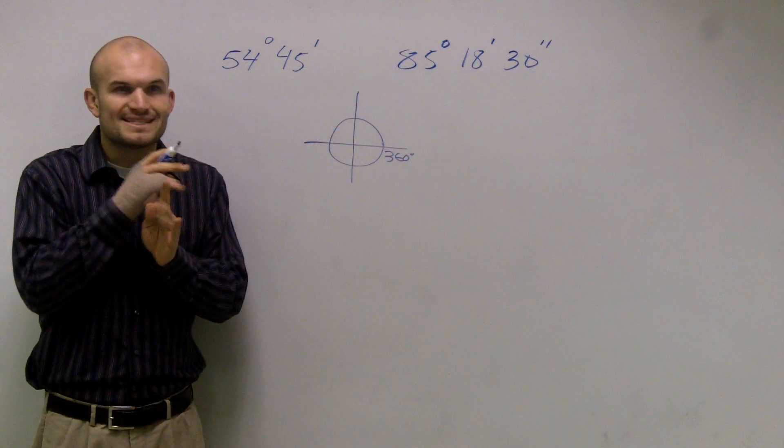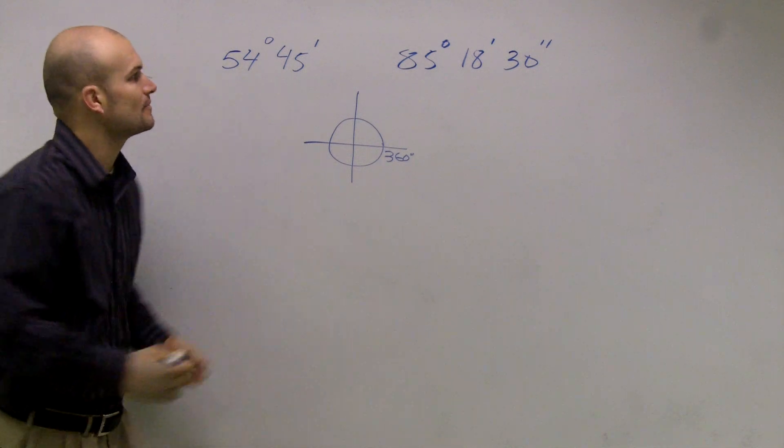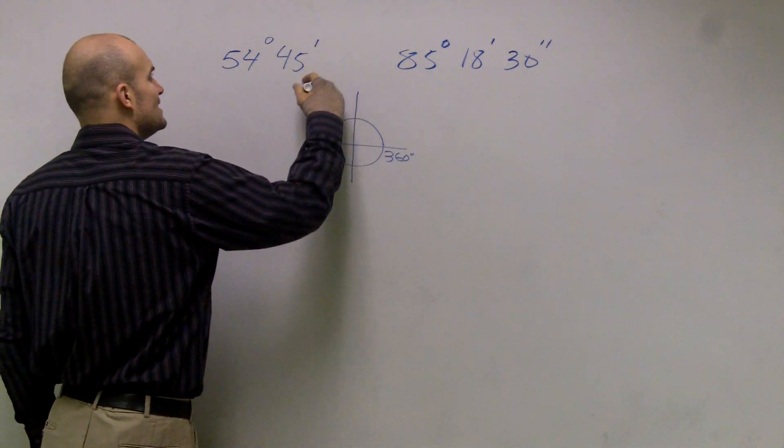What if I want a more exact measurement? What if I want to get smaller and smaller between one and two degrees? How do you measure that? Well, we do that by what we call minutes.